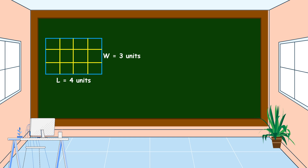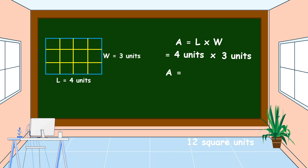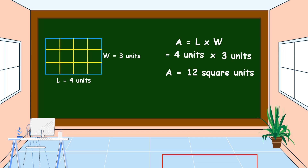To find the area of this rectangle, we use the formula: area is equal to length times width. The length is four units and the width is three units. Four units times three units equals 12 square units. This is the area of this rectangle.